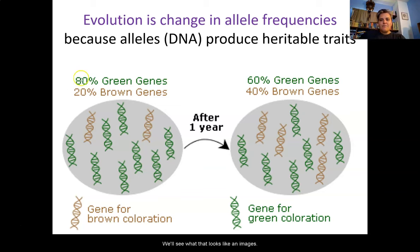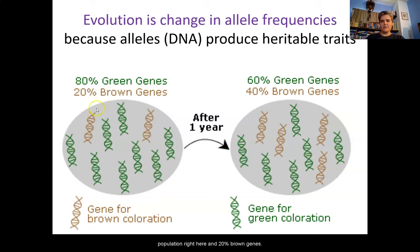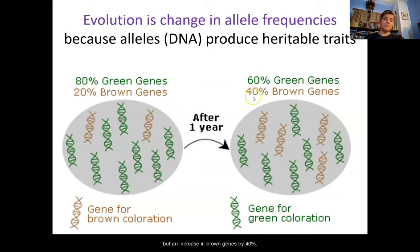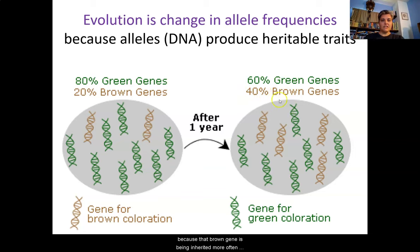Let's see what that looks like in images. You have 80% green genes in this population and 20% brown genes. After a year, because the green ones are easier to see, there's a decrease down to 60% green genes but an increase in brown genes to 40%. We've had a change in allele frequency because that brown gene is being inherited more often than the green gene.